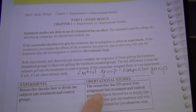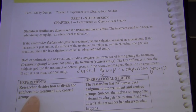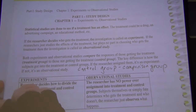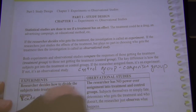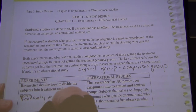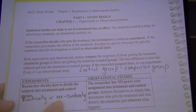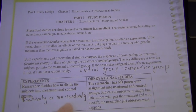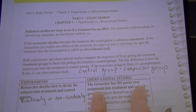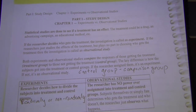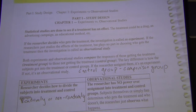Observational studies are just what they say: the researcher has no power over who gets the treatment and who doesn't — they just observe. Used when you can't assign treatments, like studying effects of smoking or drug use.